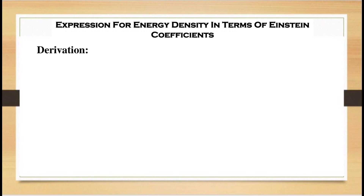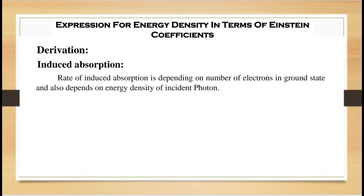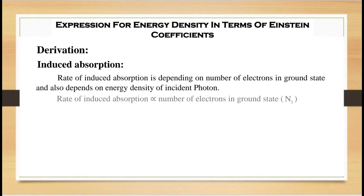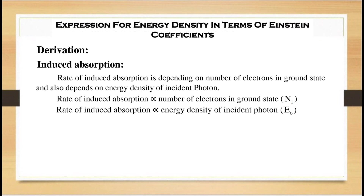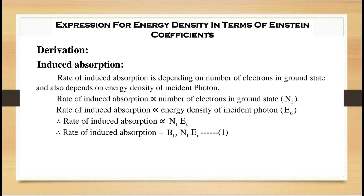Now let us derive the expression for energy density in terms of Einstein coefficients. Consider induced absorption: during this process, light energy is absorbed by the atom and it gets elevated to the excited state. The rate of induced absorption is proportional to the number of electrons in the ground state N1 and the energy density of the incident photon E_μ. Therefore, rate of induced absorption equals B12·N1·E_μ, where B12 is the Einstein coefficient of induced absorption.